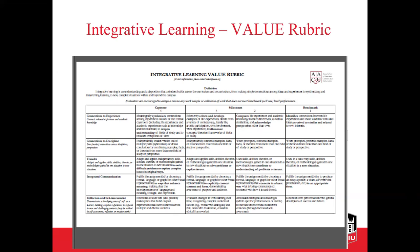An example is the integrative learning VALUE rubric. Each of the 16 rubrics has a matrix with different levels of performance, different content areas, components of the rubric, and descriptors. There's another page with a narrative description of what the AAC&U considered for this integrative learning value rubric — the same thing for written communication, oral communication, intercultural communication, and others. I will send you that link and encourage you to take a look, because it can save you a lot of time — you don't have to start from scratch.